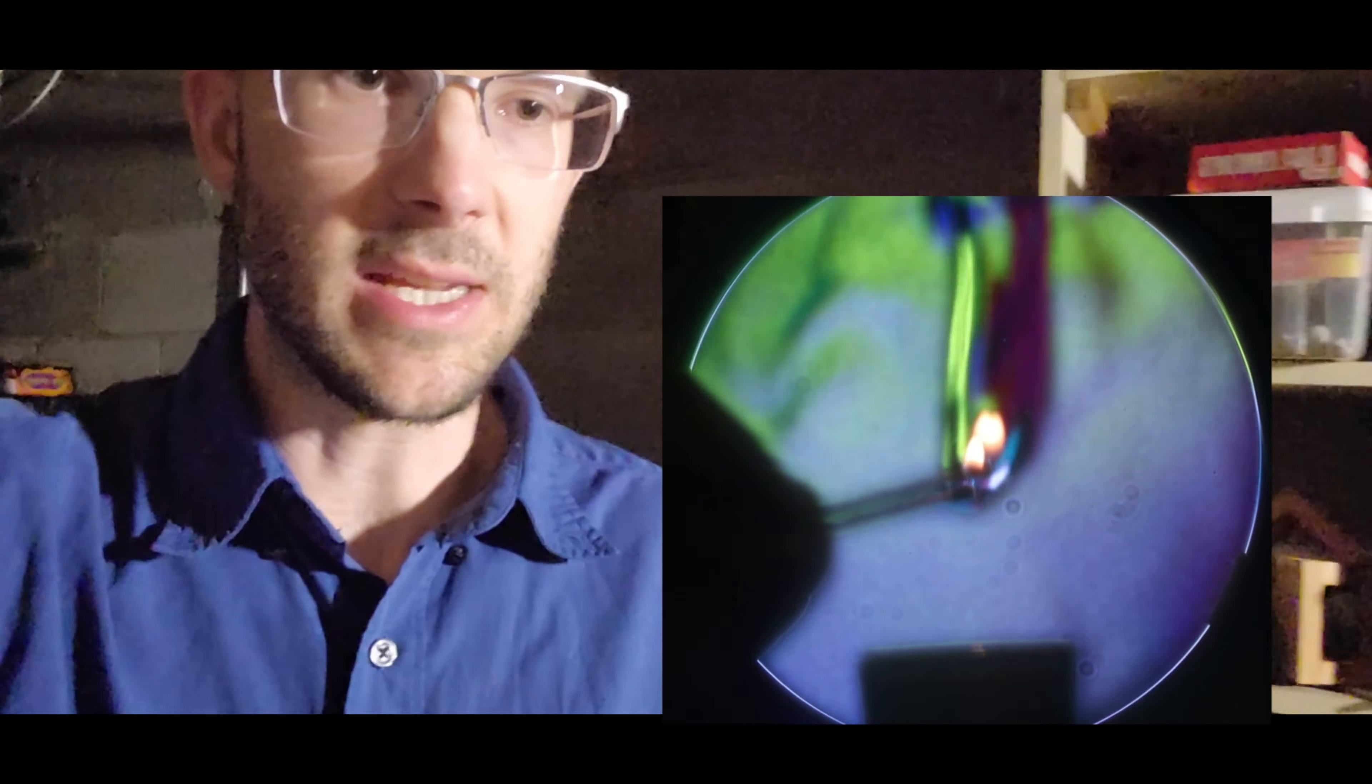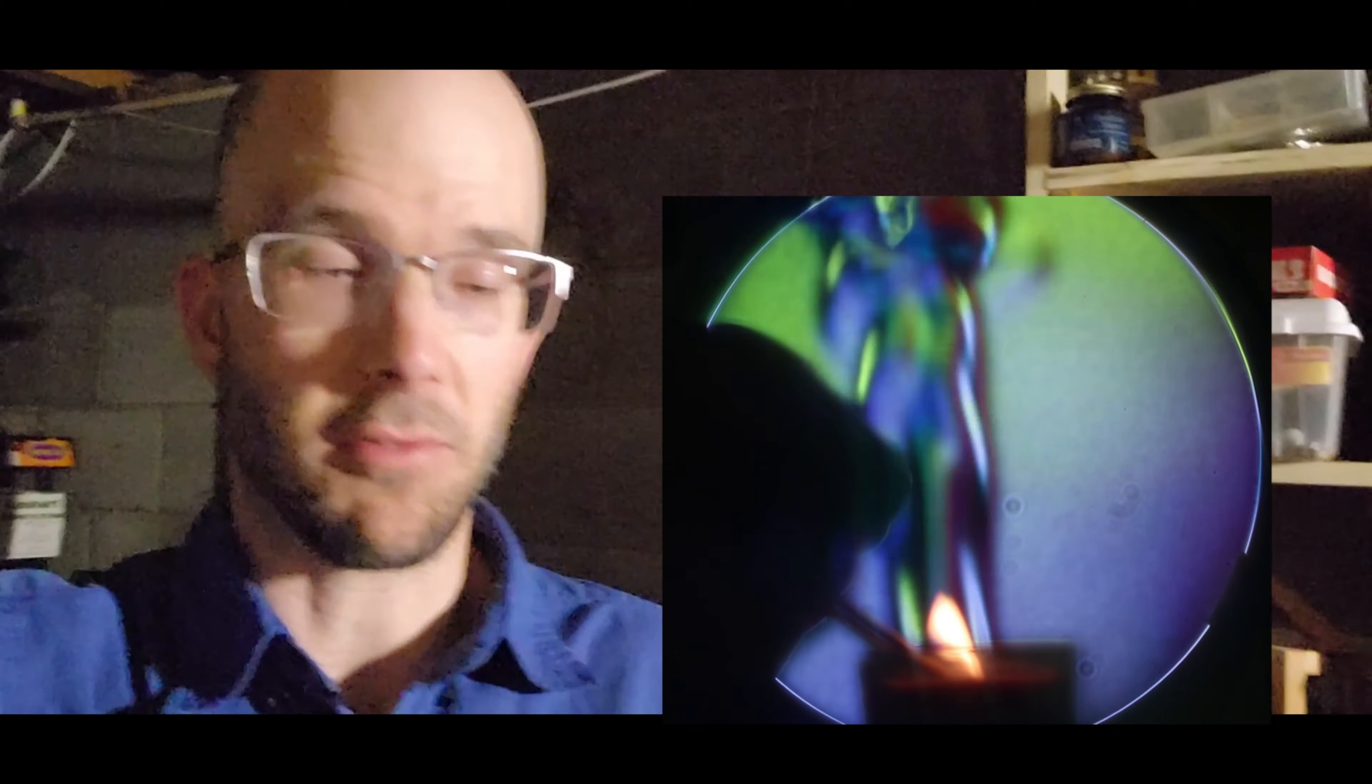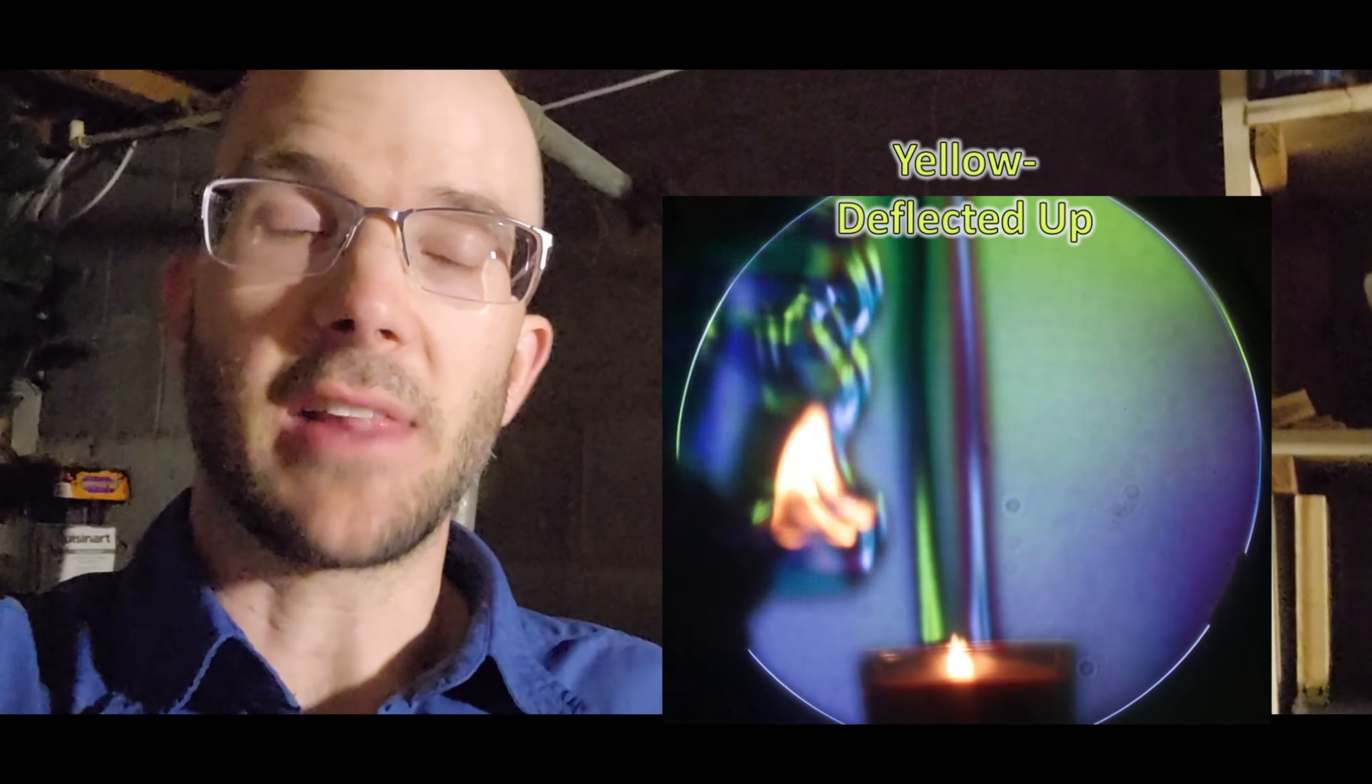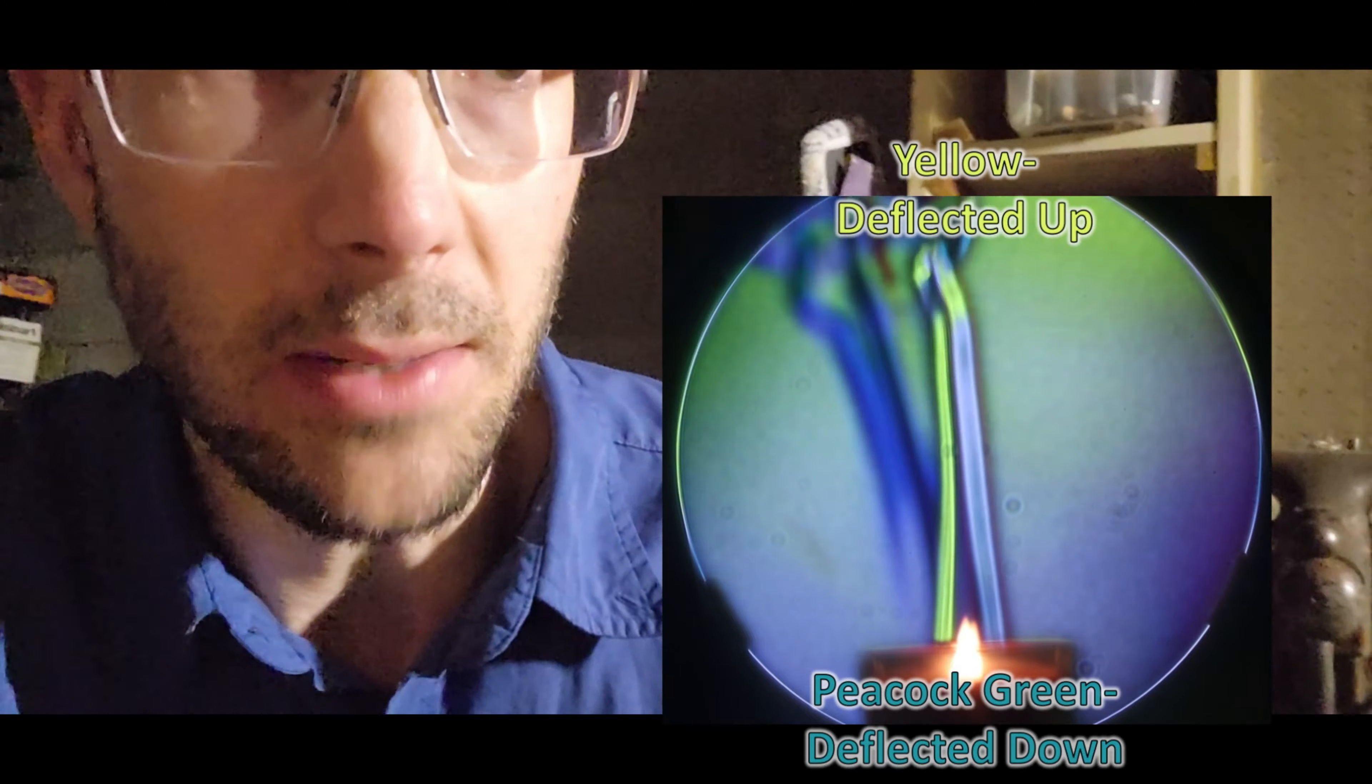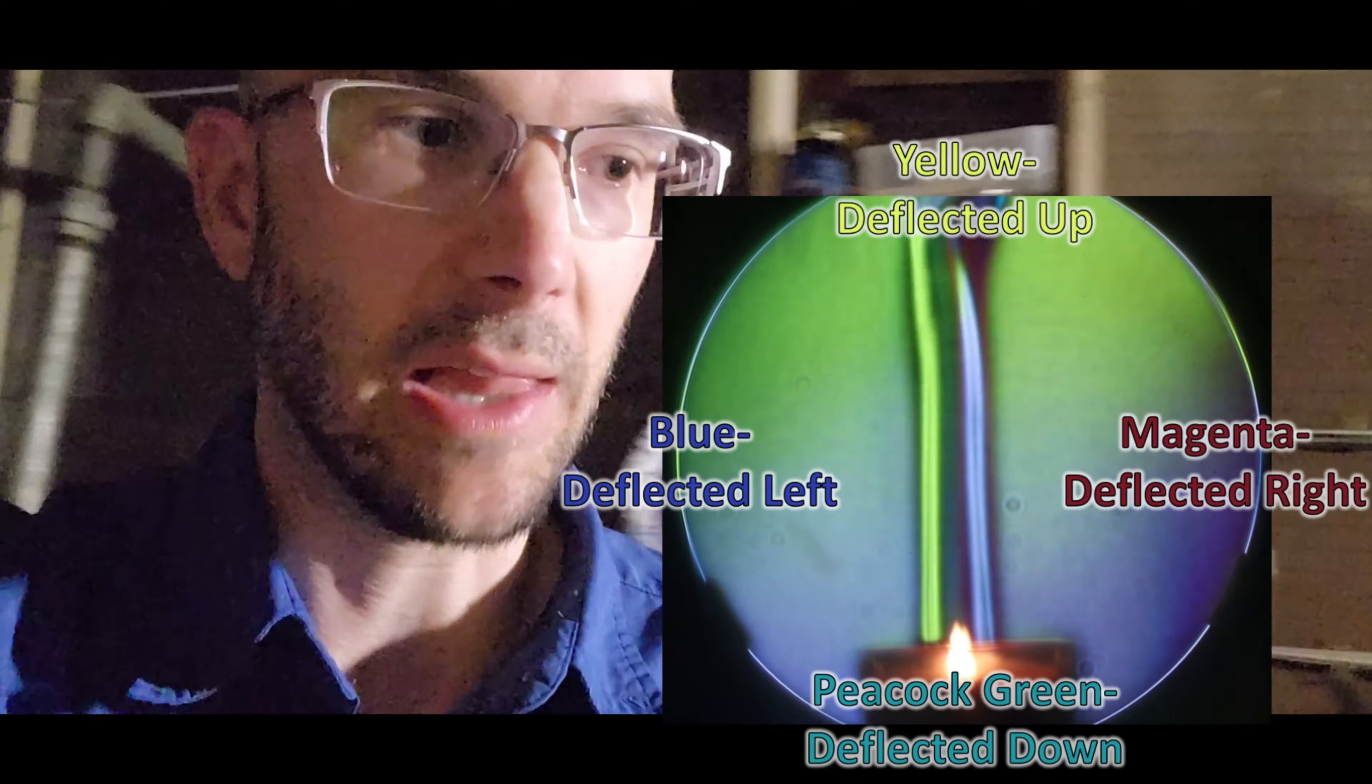So in this first video what you're seeing is actually the Schlieren setup with four filters, four different color filters. So when you see yellow that's the light actually being deflected up. If you see green it's deflected down. If you see magenta that's deflected to the right and if it's blue that's deflected to the left.